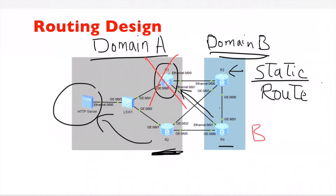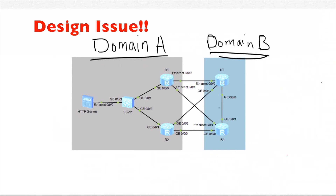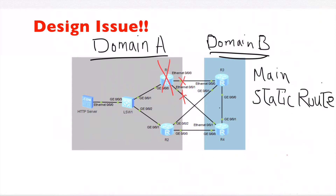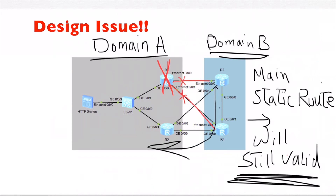There will be a backup static route pointing to R2. If R1 has a failure, or its connections to domain B have a failure, the backup static route to R2 should become active. However, if R1 entirely goes down or its two interfaces go down, the main static route from R3 and R4 will still be considered valid, and the backup static route via R2 will not become active. This is the design issue.